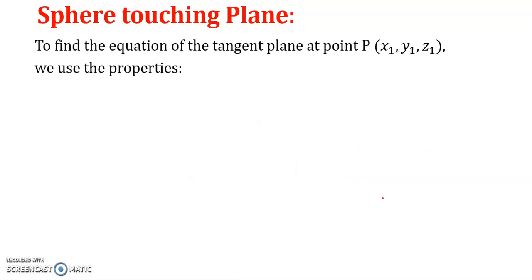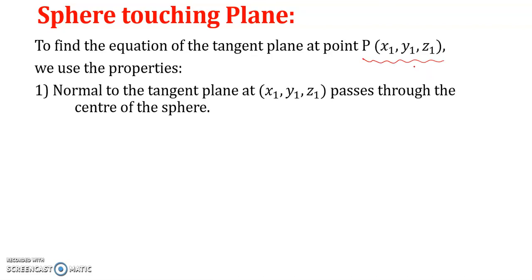To find the equation of the tangent plane at point P with coordinates (x₁, y₁, z₁), we use two basic properties. First, the normal to the tangent plane at point (x₁, y₁, z₁) passes through the center of the sphere. So the line passing through point P and the center of the sphere will be perpendicular to the tangent plane.